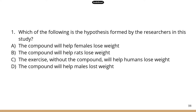Answer A states the compound will help females lose weight — that's not correct, because the previous study was based on male rats and the current study uses male human subjects only, so we know nothing about females. Answer B says the compound will help rats lose weight — that's not correct either, because the current study is about human subjects. The part about rats has already been supported by the previous study, so the researchers have moved on to human trials. Answer C says exercise without the compound will help humans lose weight — but this study focuses on the plant-derived compound, not exercise.